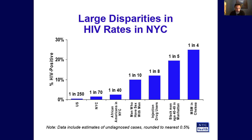This slide, put together by our commissioner at the time, Tom Frieden, compared what was going on in New York City to the rest of the United States. We estimated that in the US, one in every 250 people were HIV positive, compared to one in every 70 people in New York City. Breaking it down further: one in 40 African Americans in New York City, one in 10 men who have sex with men, one in eight injecting drug users, one in five Black men aged 40 to 49 in Manhattan — that's a staggering 20% — and 25% of men who have sex with men in Chelsea. The new surveillance system really opened up a lot of opportunity to gain insight and respond to what was a very extensive HIV epidemic in some communities around the city.